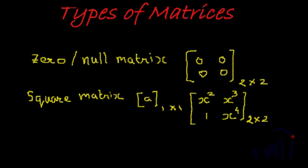Then we have the zero or null matrix, where every element in the matrix is zero. As you can see, this is a null matrix with all elements being zero. This typically results from a mathematical operation. The order of a null matrix can be anything — here we have seen a two-by-two matrix.